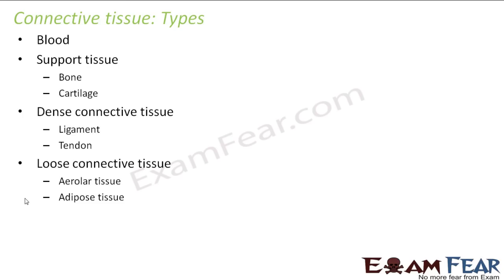The first connective tissue we will talk about is blood. The next one is support tissue. Even inside connective tissue we have broadly classified them into two types: blood, which is considered as a separate connective tissue, and support tissue. Under support tissue falls bone and cartilage. Then we have dense connective tissue and loose connective tissue.